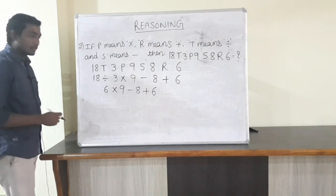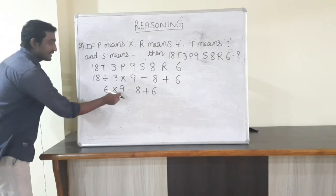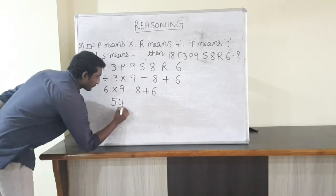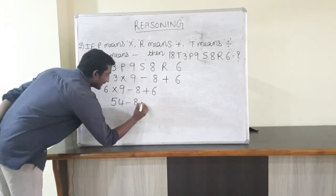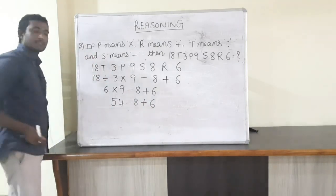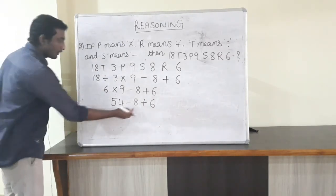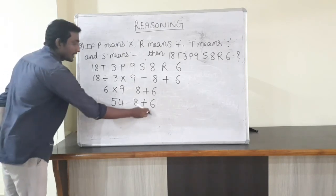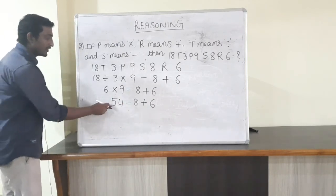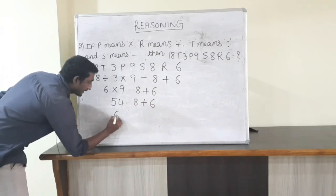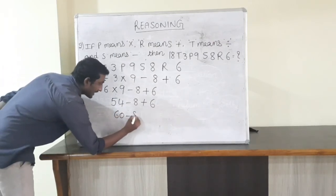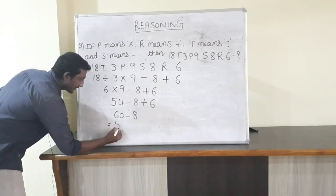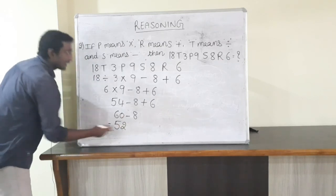By using BODMAS rule, first do the multiplication: 6 into 9 equals 54. Then we have 54 minus 8 plus 6. By BODMAS, do the addition first: 54 plus 6 equals 60. Then 60 minus 8 equals 52. The answer is 52.